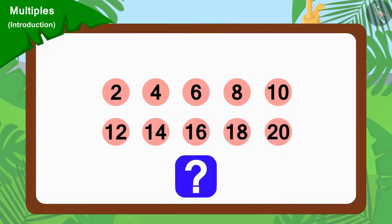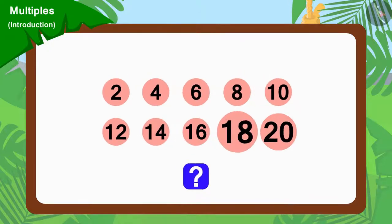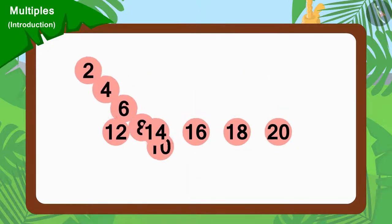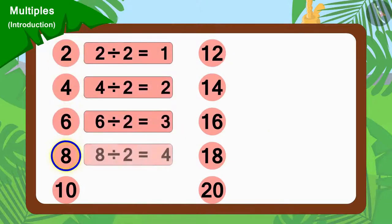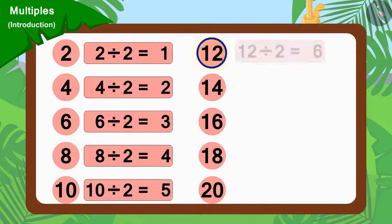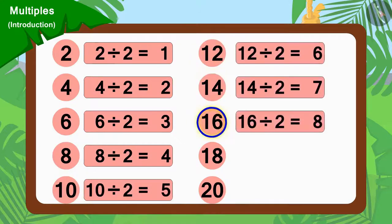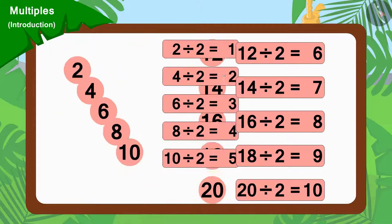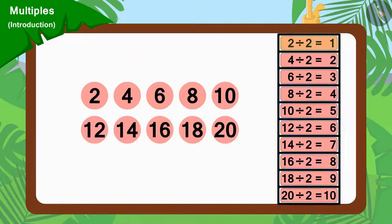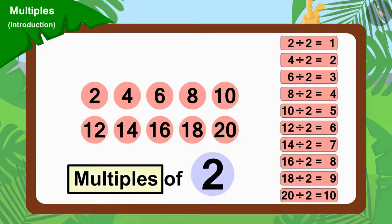Children, do you see anything special in these numbers? Yes, we can divide all these numbers by 2. Numbers that can be divided by 2 are multiples of 2. In this way, 2, 4, 6, 8, etc. are multiples of 2.